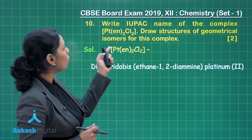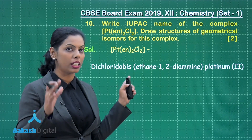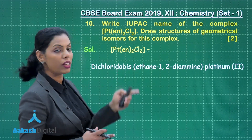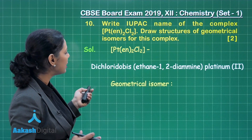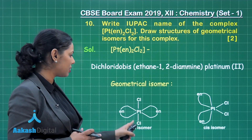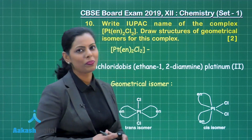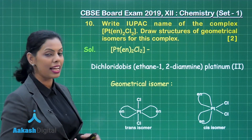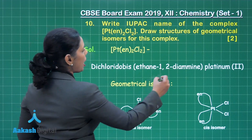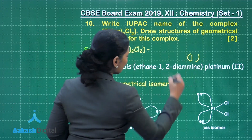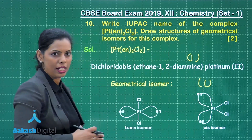If I talk about the geometrical isomers of this complex, it will definitely form geometrical isomers because it has ethane-1,2-diamine. Those geometrical isomers are the cis and trans isomers. You can clearly see this is the trans isomer and this is the cis isomer. These are the 2 geometrical isomers, giving you 1 mark for IUPAC name and 1 mark for drawing both geometrical isomers.